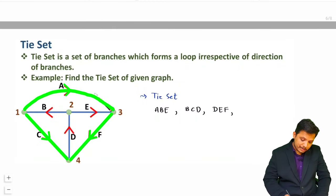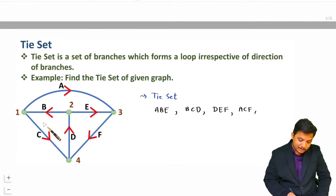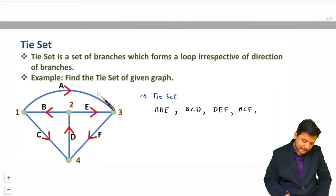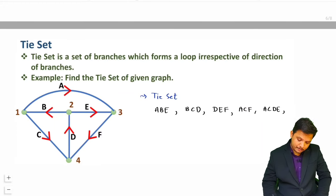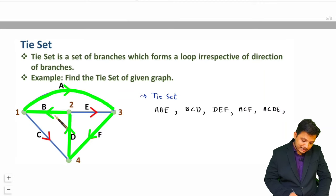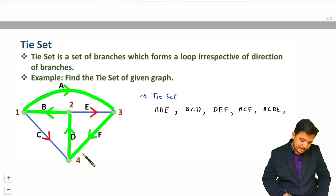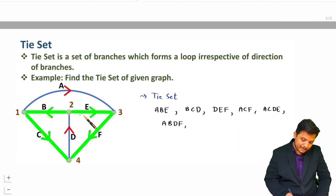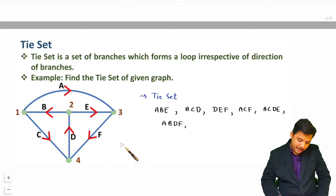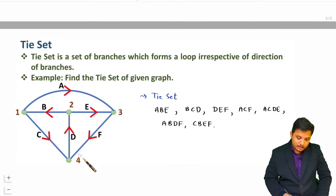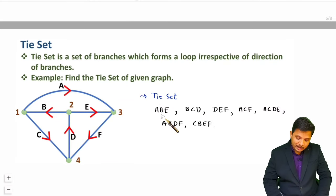The fourth tie set is the outer loop ACF. Inside there are also more tie sets: one loop is ABDF, and another tie set is CBEF. So in this graph these many loops are there and those are the tie sets.